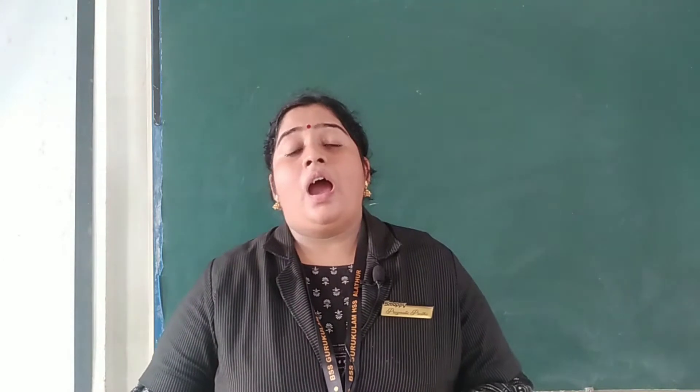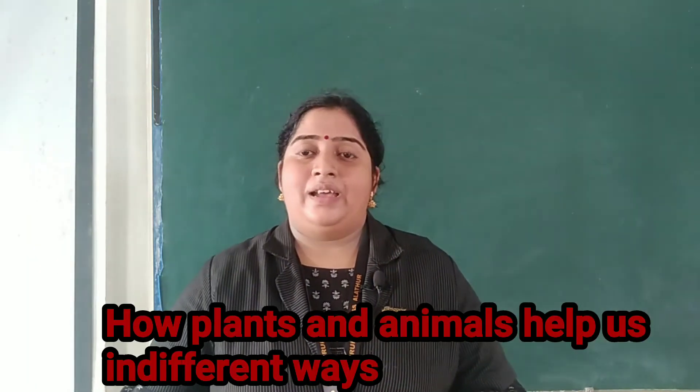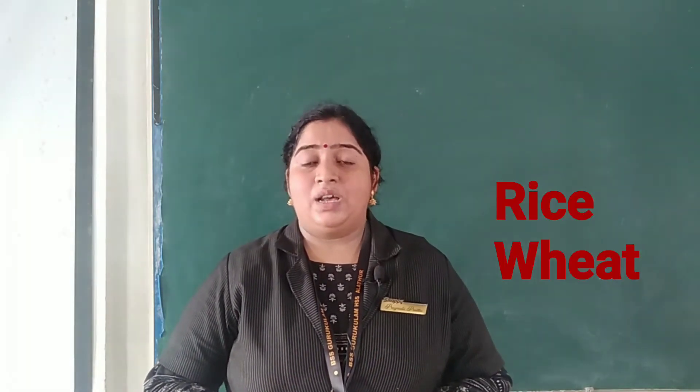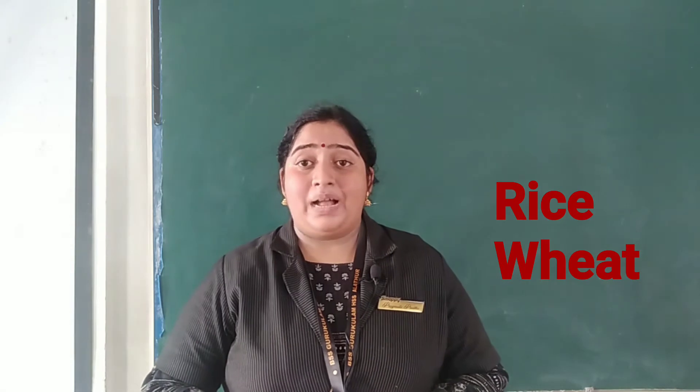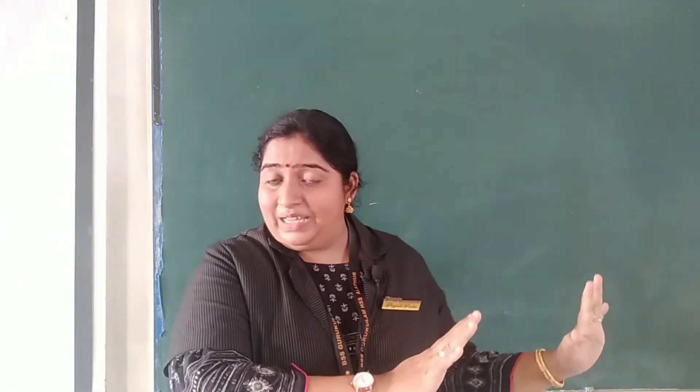We are going to think and say how plants and animals help us in different ways. Plants give us fruits, vegetables, grains like rice, wheat, pulses like beans, gram, tea, coffee and spices come from plants.